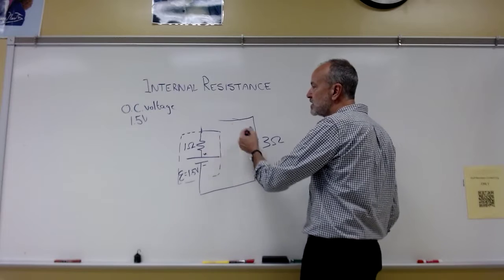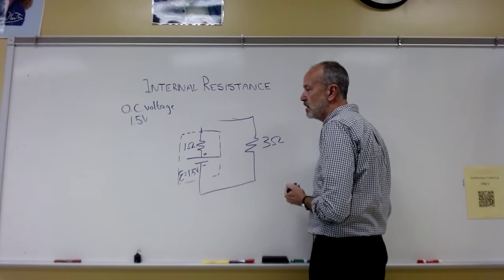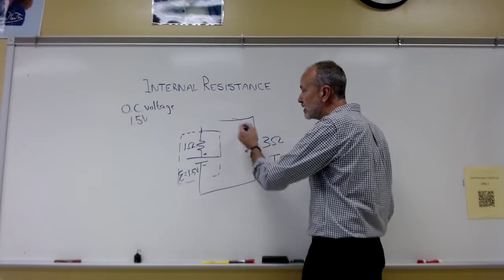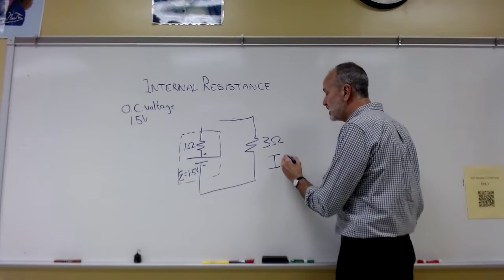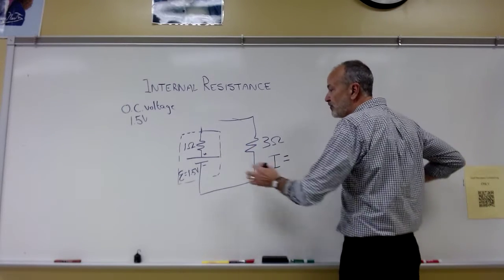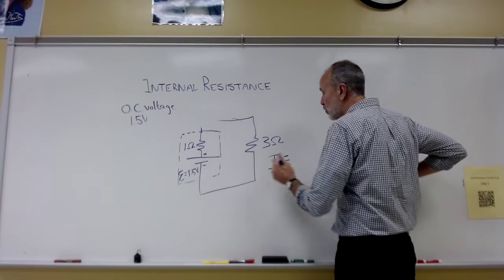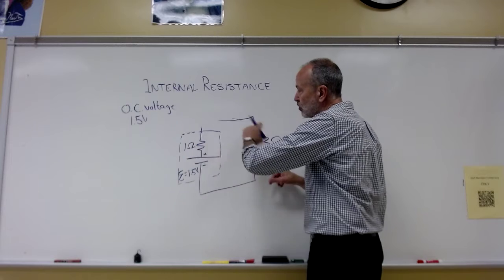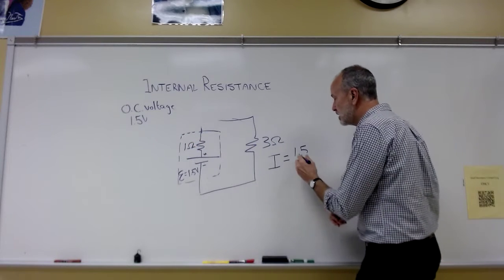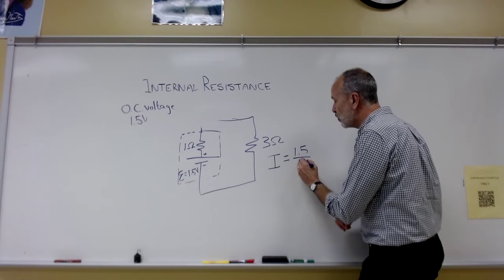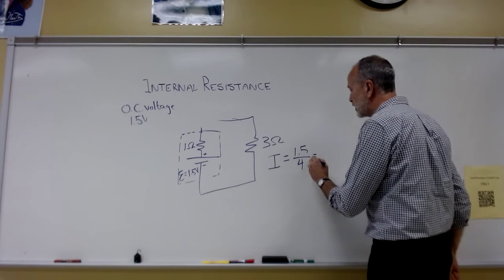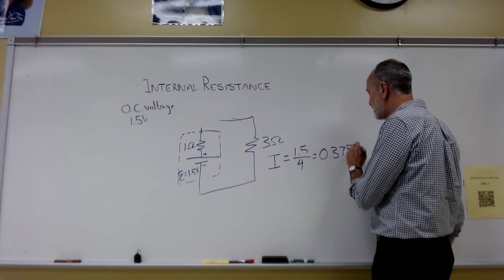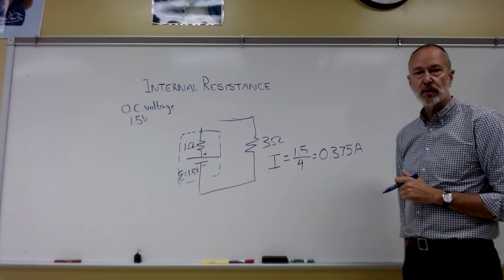Well, this is a series resistance. So the current in this one is going to be, current anywhere in the series is going to be the voltage. The potential difference here is 1.5, and that's 1.5 volts across both of those resistors in series, which is 4 ohms. So you end up with 0.375 amps.